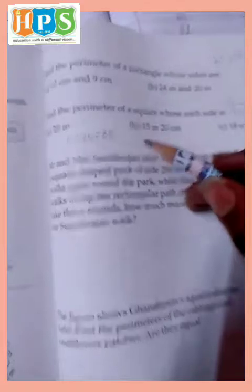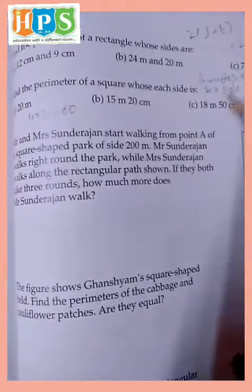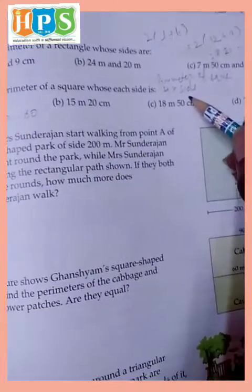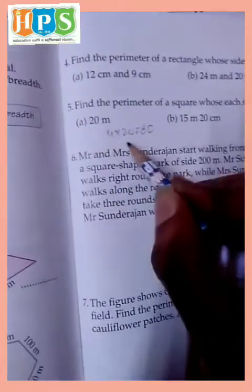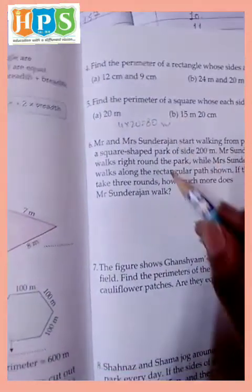Find the perimeter of square side 20 meter. Perimeter of square side, 4 multiply side, so 4 multiply 20, 4 plus 8 and 0, 80 meter.